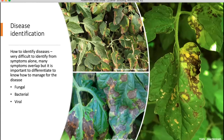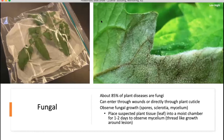Disease identification can be very difficult based on symptoms alone. There are several disease symptoms that can look similar to other diseases or to abiotic disorders. I'm going to go over fungal, bacterial, and viral diseases. Here's just a picture of a fungal disease, a bacterial disease, and a viral disease. We're going to start with the fungal diseases.